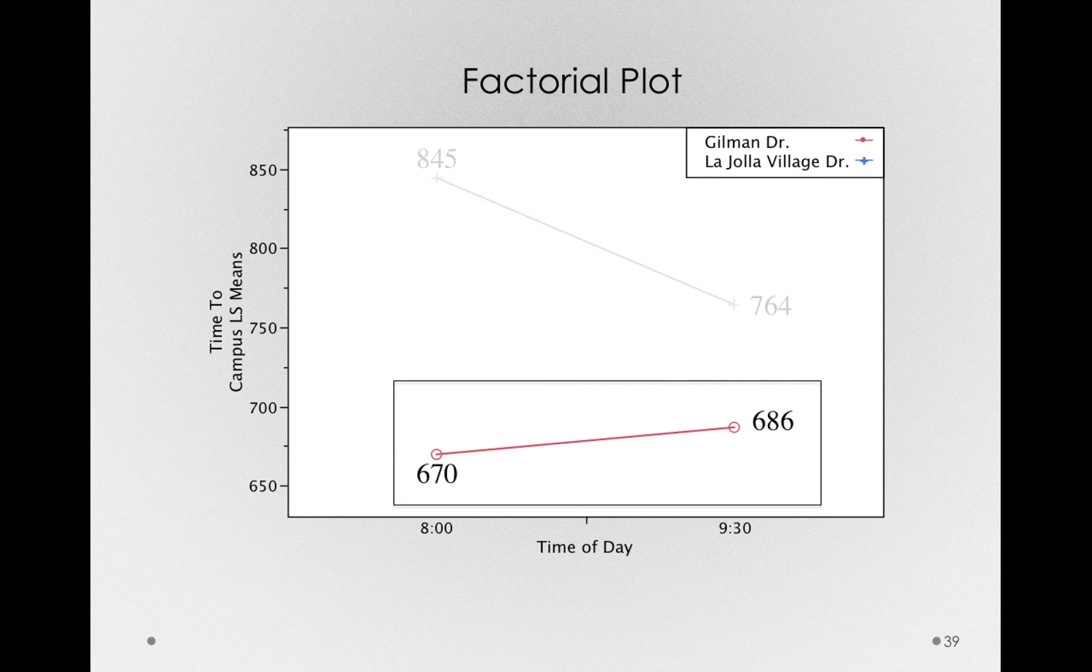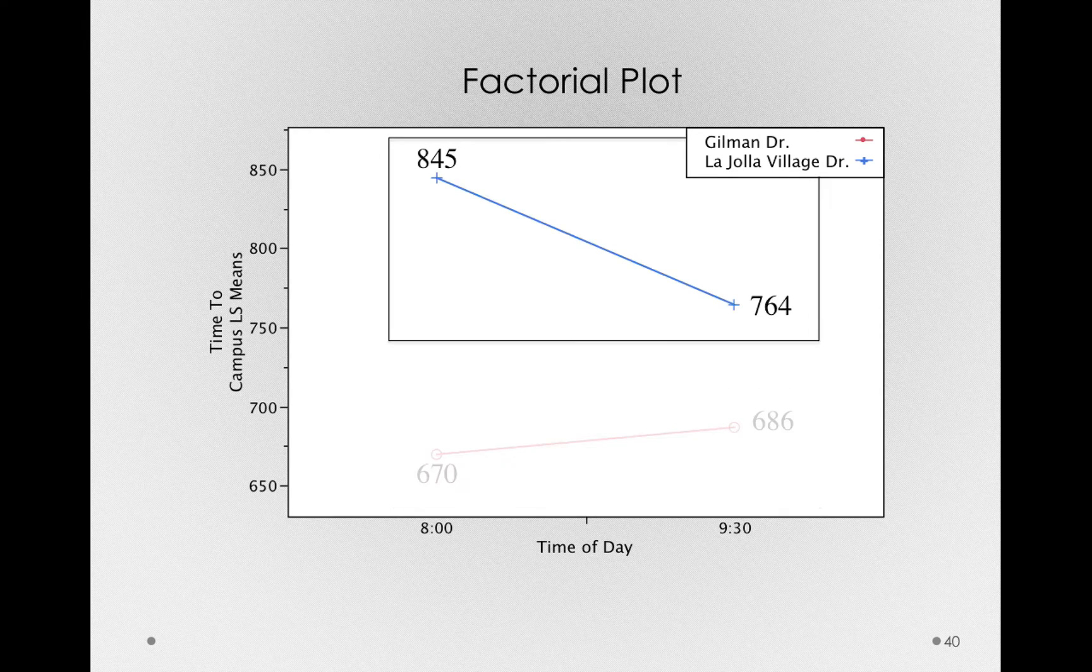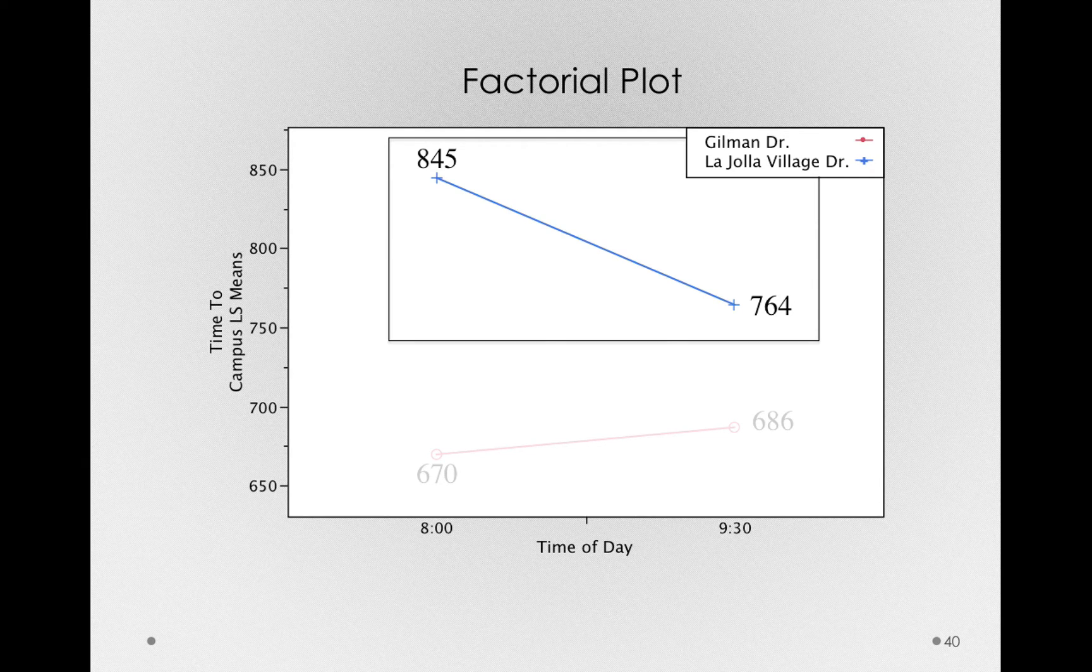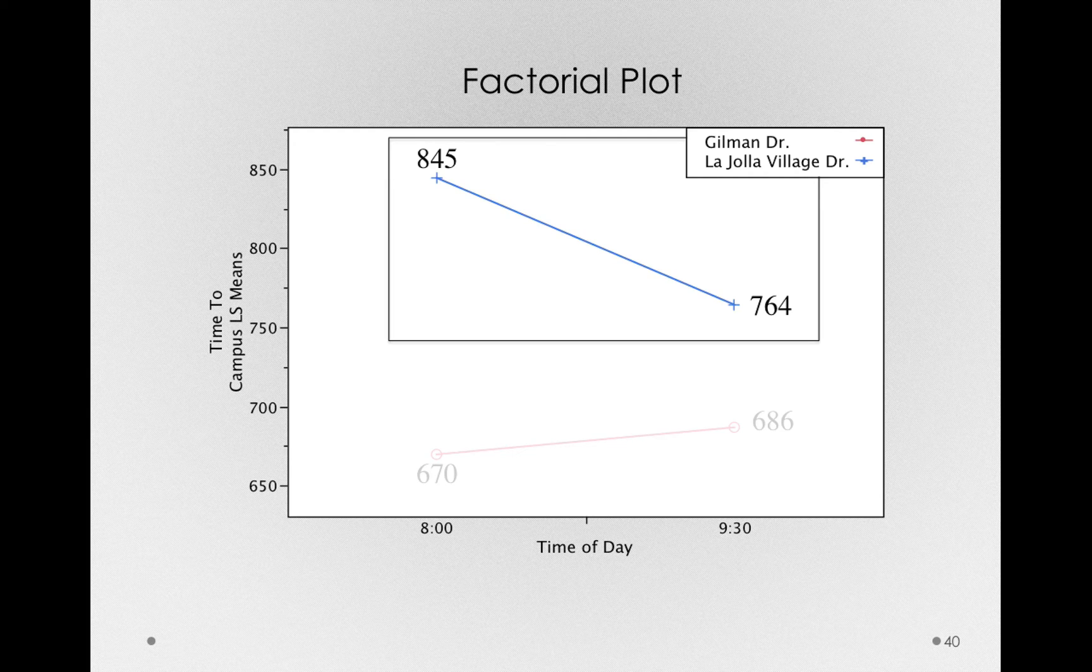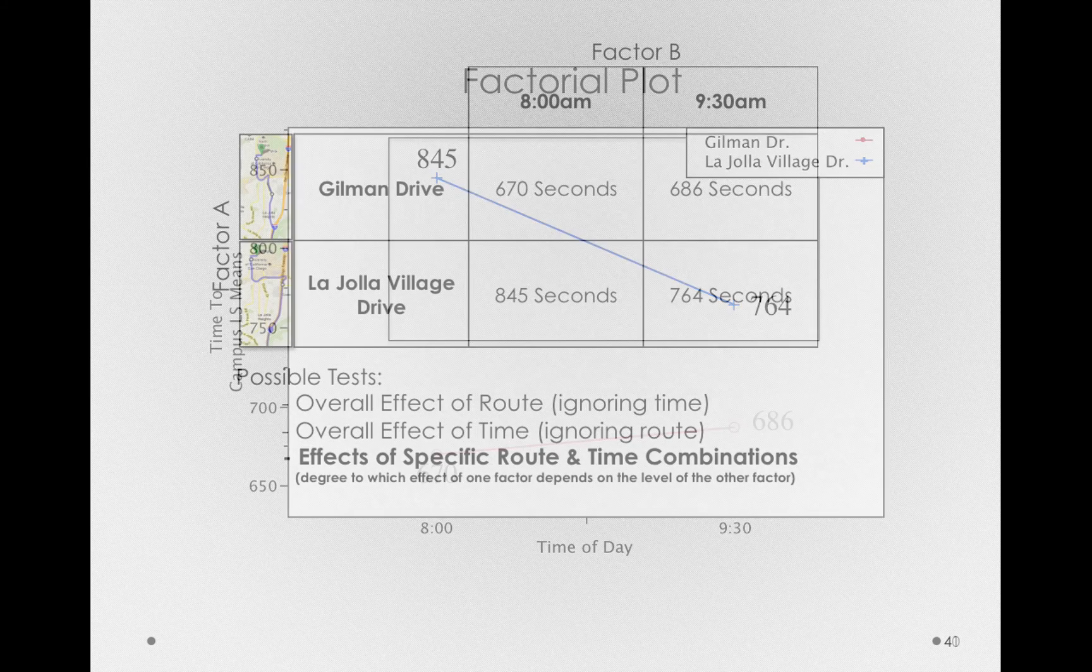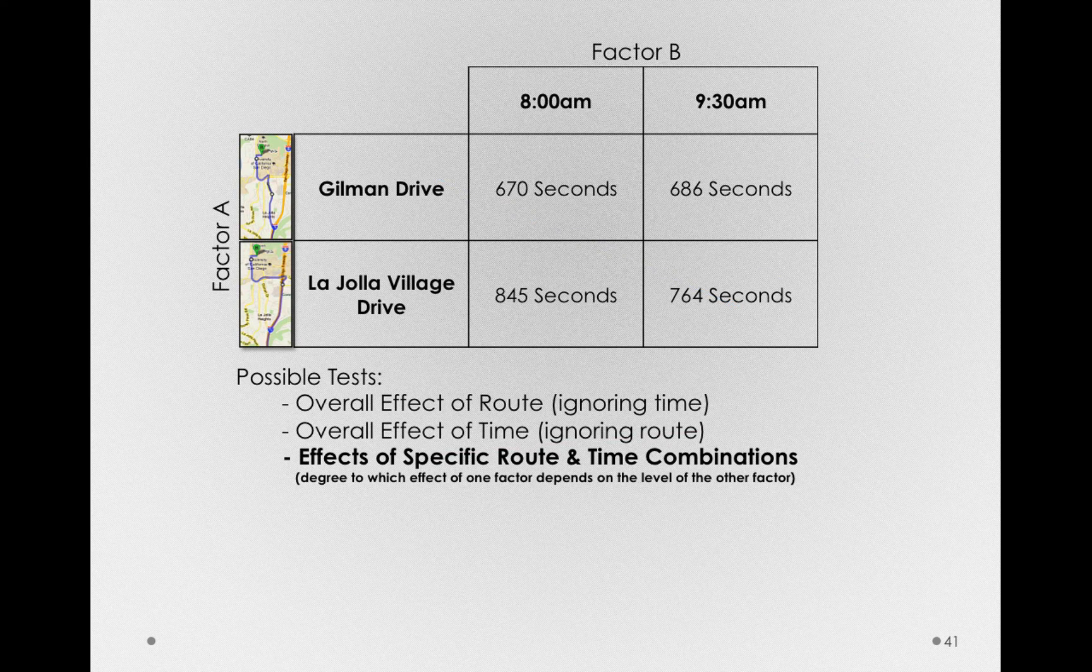Now, let's look at the effect of time of day at La Jolla Village Drive. Notice in this case, the effect of time of day is different. In this case, it's actually faster to get to campus if I go at 9:30 than if I were to go at 8:00. These are the data. This is the actual effect that will enter into that final test.